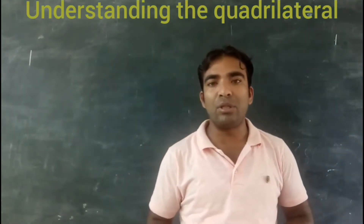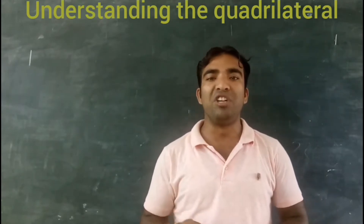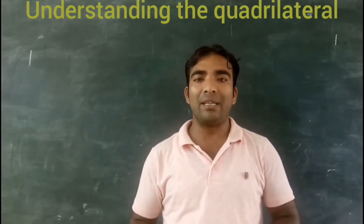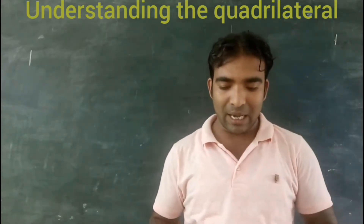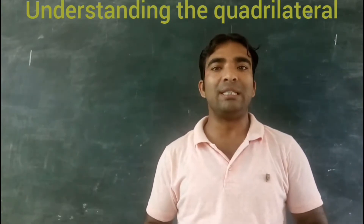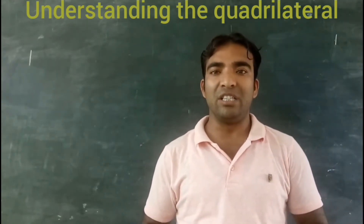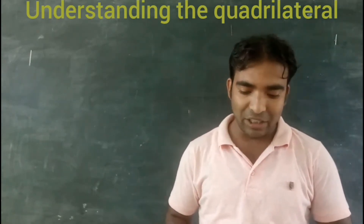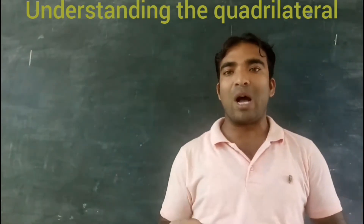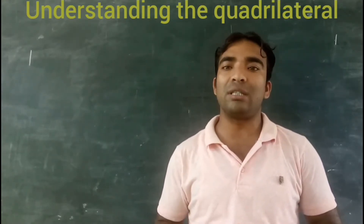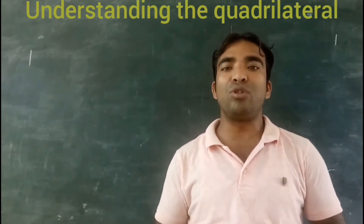Now we will discuss the classification of the polygon on the basis of their shape. On the basis of shape, we can classify the polygon into two different types. The first one is known as the convex polygon and the second one is known as the concave polygon. A convex polygon can be defined as a polygon where all its interior angles measure less than 180 degrees. A concave polygon will always have at least one or more angles whose measure is more than 180 degrees, that is, a reflex angle.